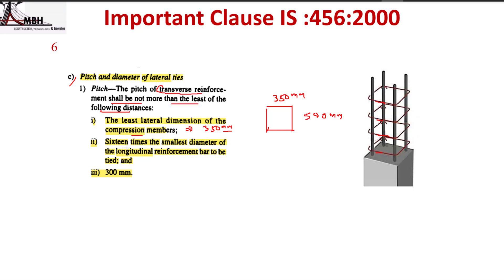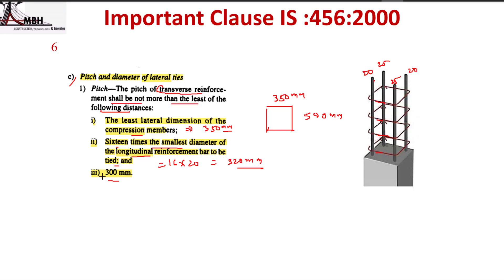The second condition is 16 times the smallest diameter of the longitudinal bars to be tied. For example, if bars of different diameters are used and the smaller diameter is 20 mm, then 16 × 20 = 320 mm. The third condition is 300 mm. The pitch of lateral ties shall not exceed the least of these three values, which in this case is 300 mm.